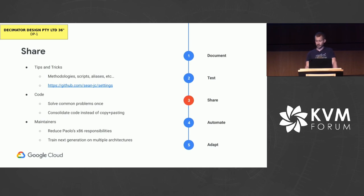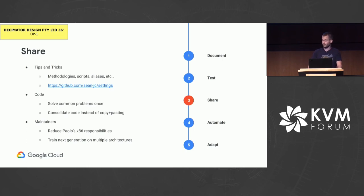That mostly covers latency and efficiency of developers and maintainers — but what about achieving a more efficient code base? The obvious answer is that we need to put more effort into sharing code between architectures: solve common problems once instead of replicating features and fixes across multiple architectures, and when implementing an existing feature on a new architecture, consolidate code instead of copy-pasting. But without a forcing function, telling people to go share code isn't going to get us anywhere. To that end, we need maintainers that work across architectures so they have the knowledge and authority to say 'this can and should be common code.' One step we've already taken is to reduce Paolo's responsibilities on x86 so he can focus more on KVM as a whole. Another way is to train the next generation of KVM developers and maintainers on multiple architectures — for newcomers without years of baggage, I think it's feasible to achieve greater breadth without sacrificing too much depth.